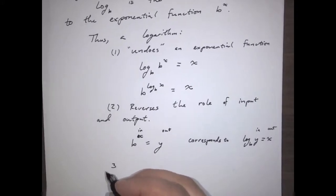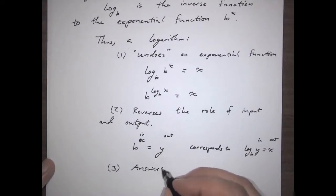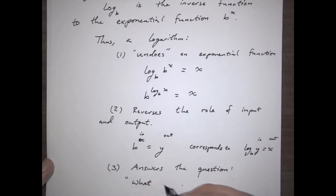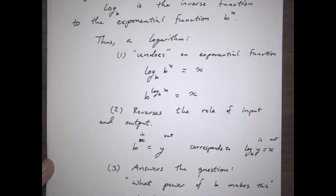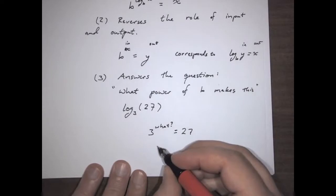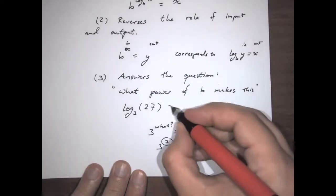A third way of looking at it would be to say that it answers the question: what power of b makes this? So log base 3 of 27 answers the question, 3 to what power equals 27? Well, that's pretty famous — 3 to the third equals 27. And so that means this equals 3.